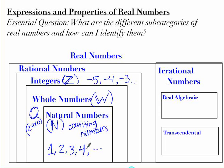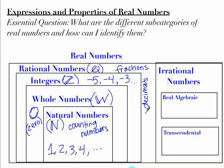Moving on, we get to the rational numbers. The symbol for that is a Q with a line through it. Rational numbers contain all the integers, whole numbers, and natural numbers. They also contain any fractions or decimals. Any decimal in here is one that repeats or is periodic — for example, one-third is 0.3333 repeating, which is a rational number.